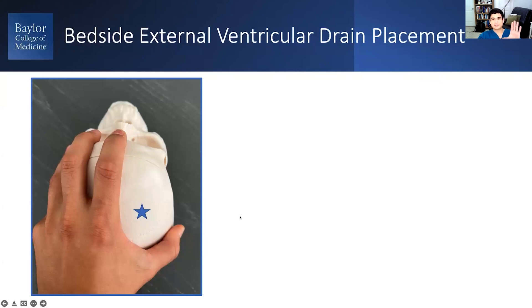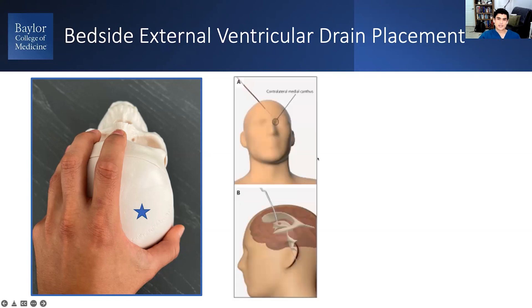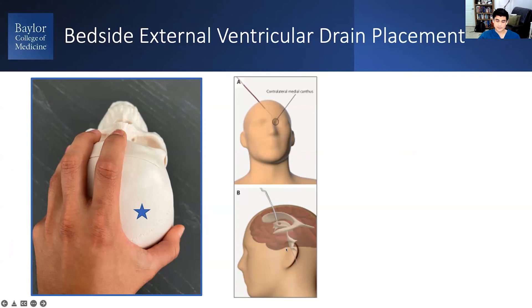One method I use: if you know the measurements of your hand, you can find Kocher's point by placing your hand on the patient. Put your index finger at the nasion and aim your thumb toward the ear — right at that junction, a couple centimeters in front of the coronal suture, you'll find Kocher's point. When passing your catheter — and this starts at the drill — you want to be aiming perpendicular to the bone. If you need other landmarks, you can aim toward the contralateral medial canthus and the tragus laterally.